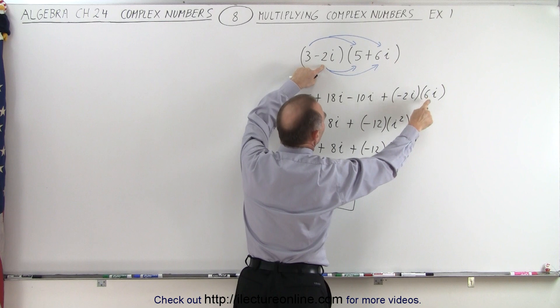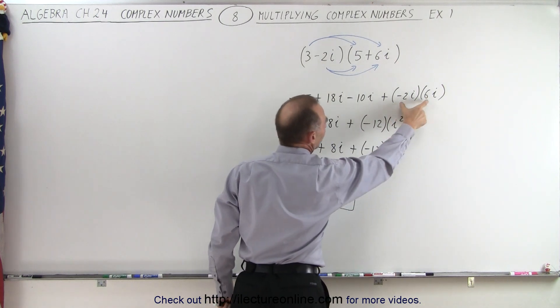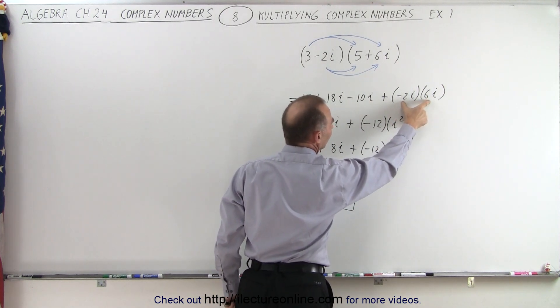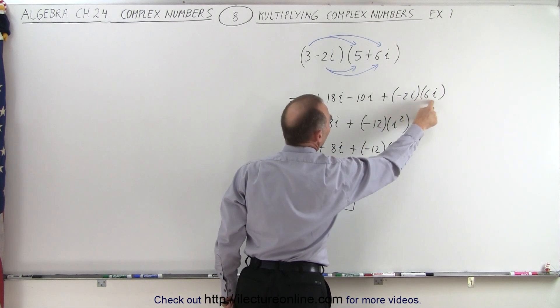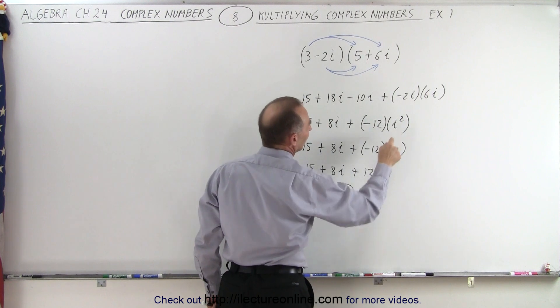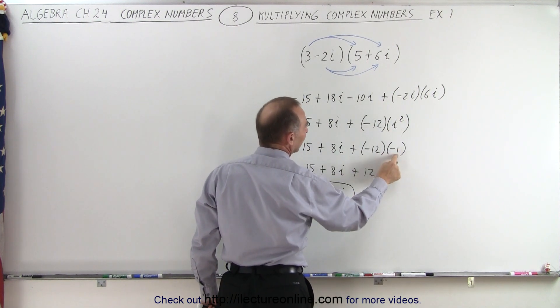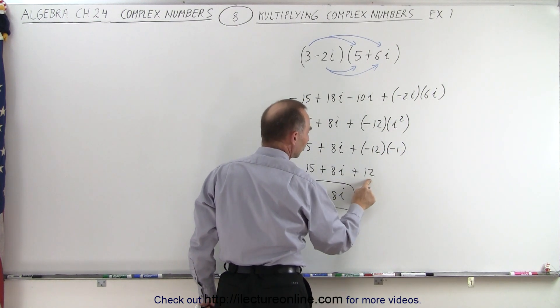That would be minus 2i and the 6i. So we multiply the two numbers together, the two coefficients. Negative 2 times 6 is negative 12. And then we add the two imaginary parts together. i times i gives you i squared. And of course, i squared is negative 1.